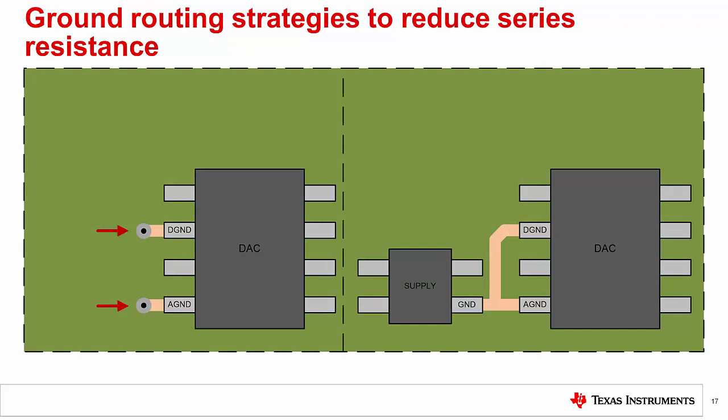Let's see how we can improve this layout. On the left, rather than sharing the same via for both analog ground and digital ground, we have created a dedicated via for each of the two pins. The shorter trace results in lower series resistance, and the digital return current path is no longer the same as the analog ground path, meaning that even if there is a higher potential due to series resistance, that potential is not seen by the analog ground pin. On the right, we have changed our device placement so that the routing order connects the digital ground pin to the supply ground first, then to the analog ground pin. Now the return current from the digital ground shares a minimal path with the analog ground, minimizing the series resistance seen on the analog ground pin and resulting in a lower potential seen on the analog ground pin.